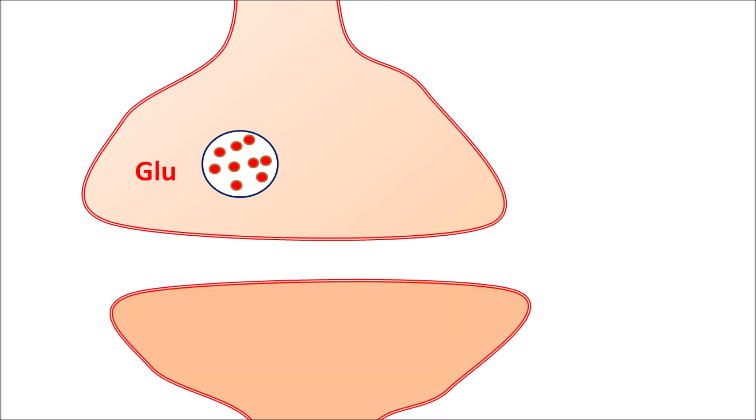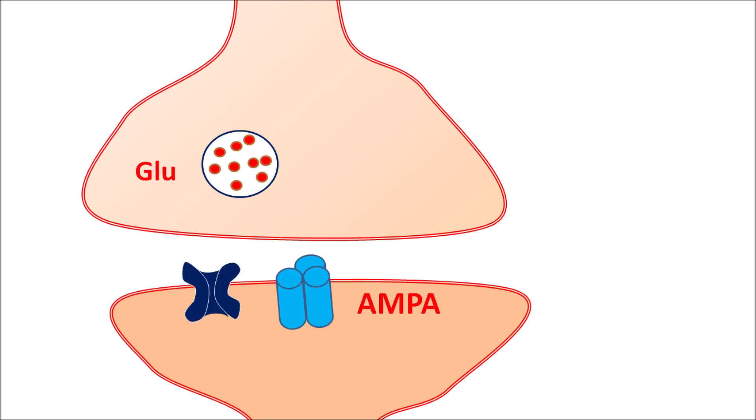The presynaptic neuron stores excitatory neurotransmitters such as glutamate, and the postsynaptic neuron is equipped with glutamate receptors including AMPA receptors and NMDA receptors. AMPA receptors are ionotropic receptors coupled with sodium channels. Normally, glutamate is released by exocytosis and acts on AMPA receptors, activating sodium channels so sodium enters to produce excitatory postsynaptic potential. Glutamate thus acts as an excitatory neurotransmitter, increasing nociception. Other mediators such as substance P also increase pain transmission.